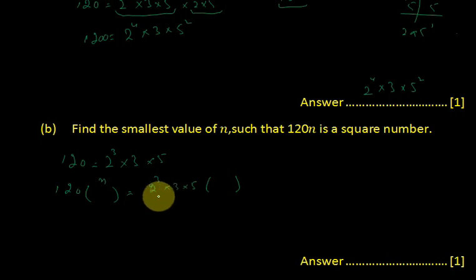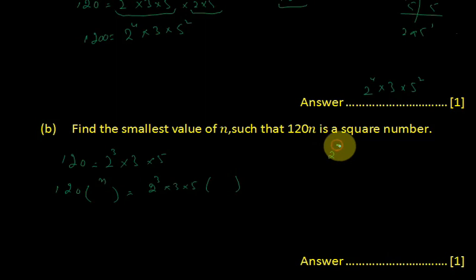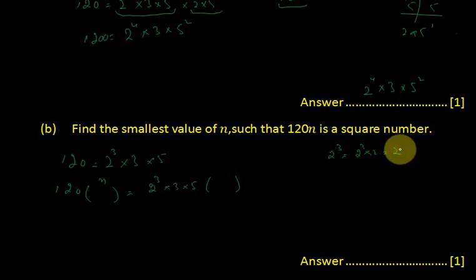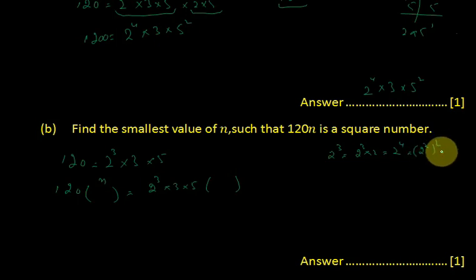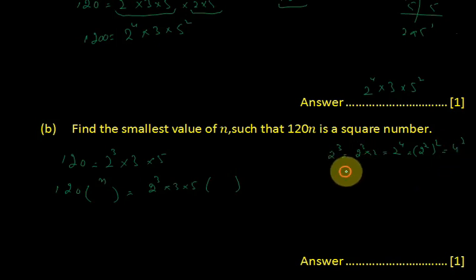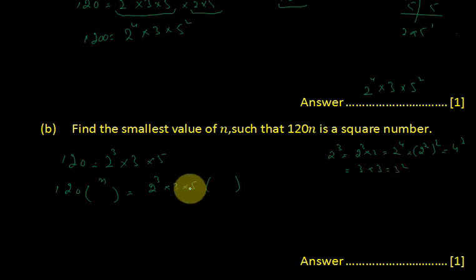For it to be a perfect square, each prime factor must have an even exponent. 2 to the power 3 can be made a perfect square by multiplying by 2, making it 2 to the power 4, which equals 4 squared. Similarly, 3 multiplied by 3 gives 3 squared, so we must multiply by 3.